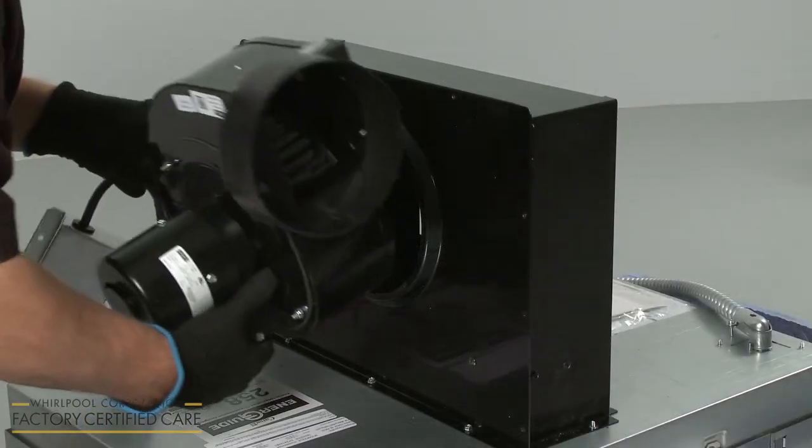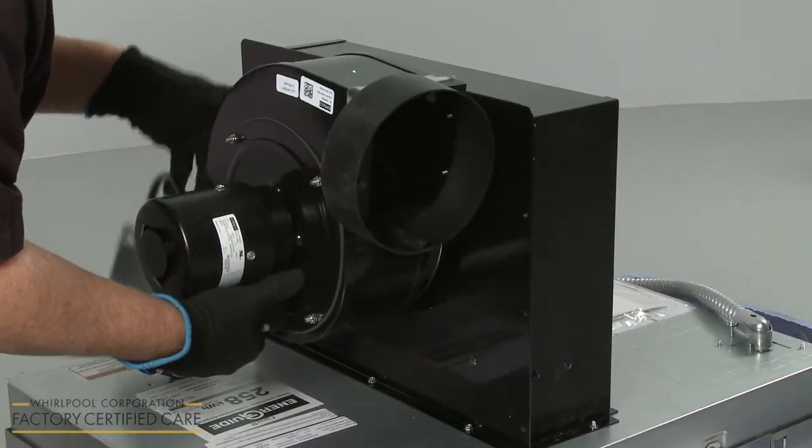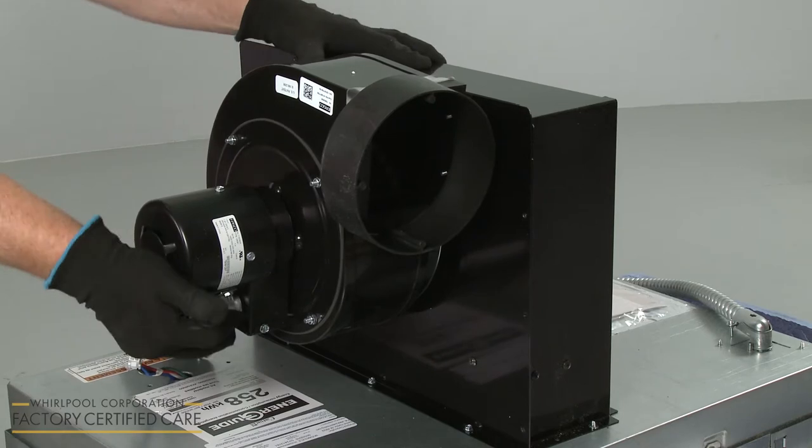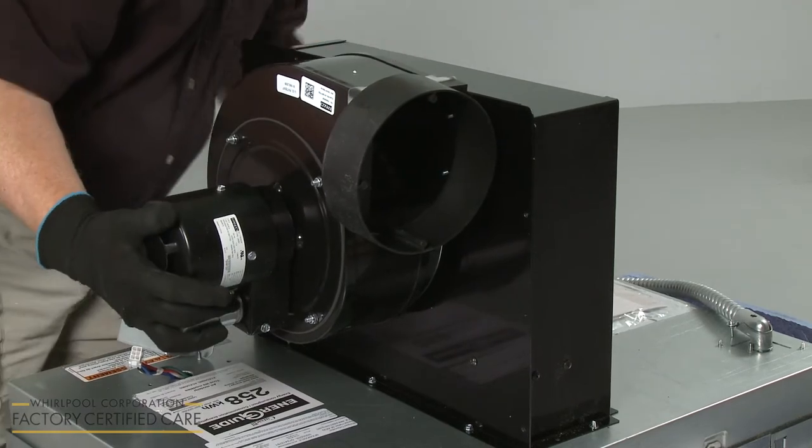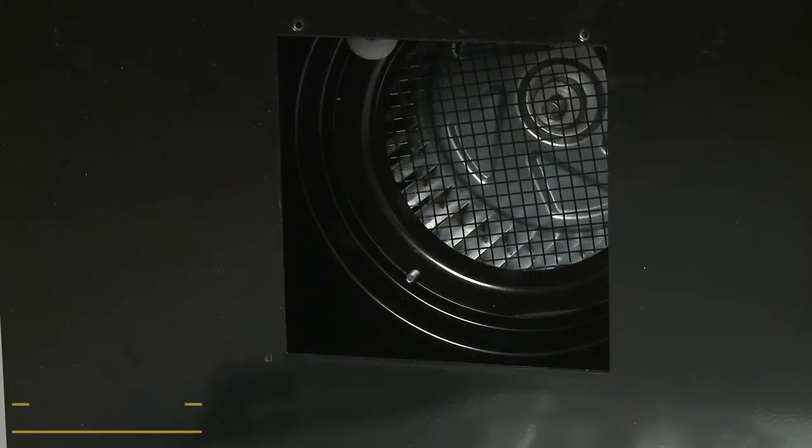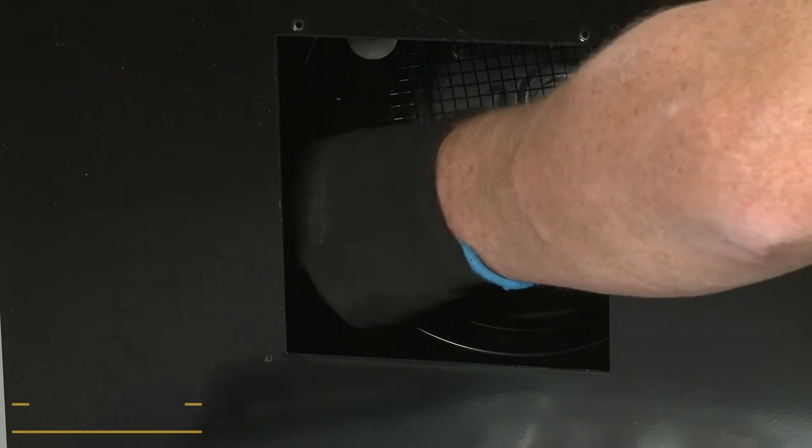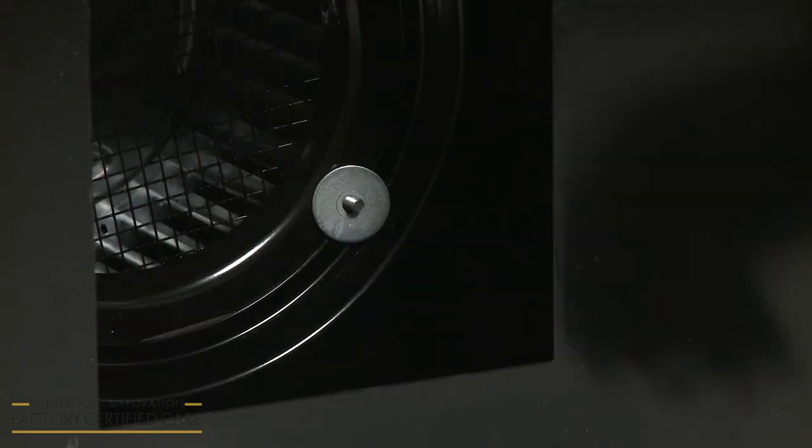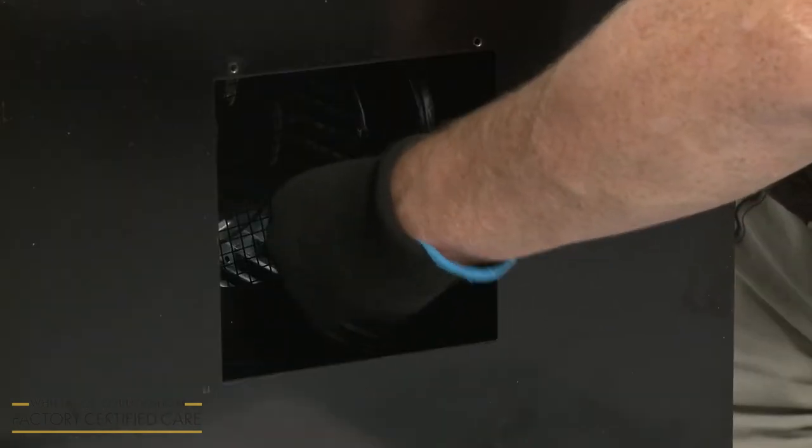Now align the motor on the plenum so the blower outlet faces the appropriate direction to line up with the installed venting. Slide the washers over the blower motor mounting bolts, then thread on the locking nuts and hand tighten. Avoid fully tightening the nuts at this time.